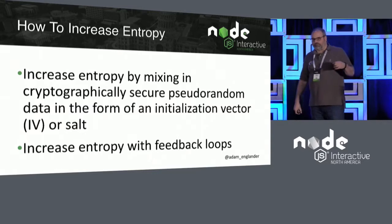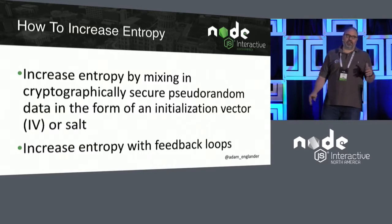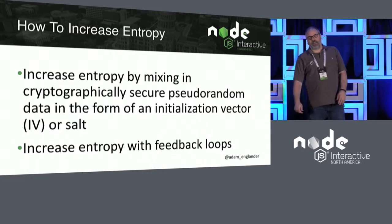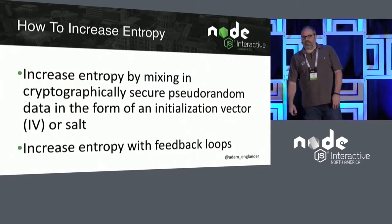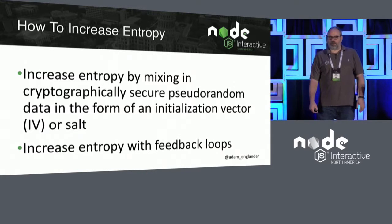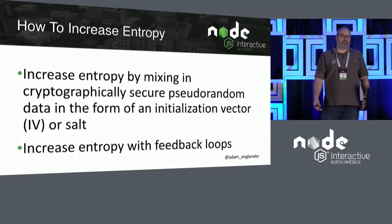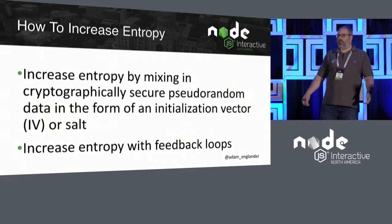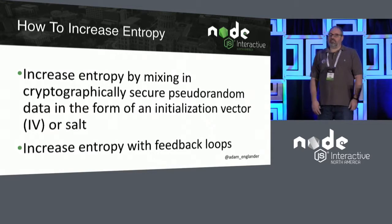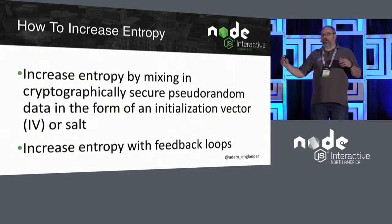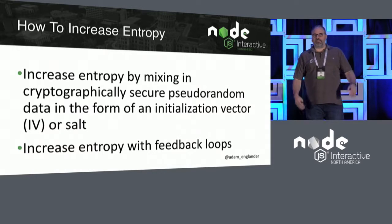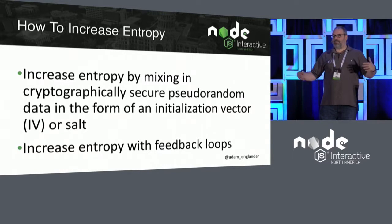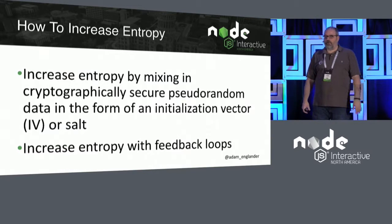Ways that you can increase entropy: mixing in cryptographically secure pseudorandom data — that's a great big term. Pseudorandom is something you'll hear a lot, because it's not actually random, it just kind of looks random. This comes in the form of an initialization vector or salt. So if you've been using crypto and you're wondering what the IV is for — the initialization vector should be random, and that will increase your entropy so that if you have the same password in your password hashes, the values that come out are going to be different. That's the important part.